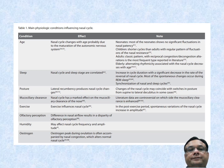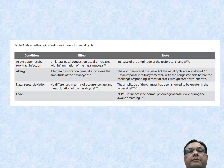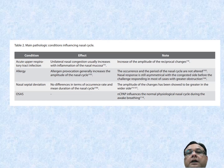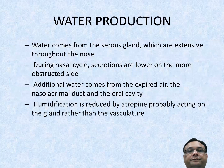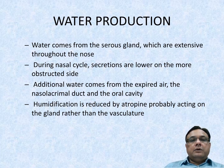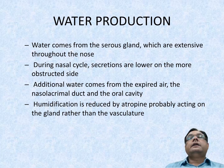Acute upper respiratory tract infections cause unilateral nasal congestion with increased amplitude of reciprocal changes. Allergy provocation generally increases the amplitude of the nasal cycle. Nasal septum deviation shows no difference in occurrence rate or mean duration of the nasal cycle. Water production: water comes from serous glands throughout the nasal cavity; during the nasal cycle, secretions are lower on the more obstructive side. Additional water comes from expired air, the nasolacrimal duct, and the oral cavity. Humidification is reduced by atropine acting on the glands rather than the vasculature.